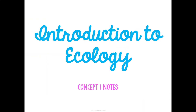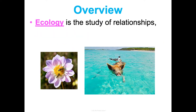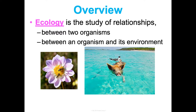This is Unit 7 Ecology, and we are going to start with Concept 1 — an introduction to ecology as a whole, because it's a really large branch of biology. Ecology is the study of relationships — between two organisms as well as between an organism and its environment. We'll be talking about how organisms relate to each other, but also how they relate to the environments that they live in.